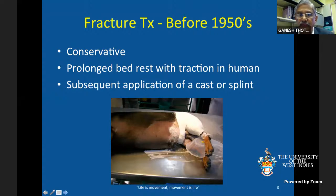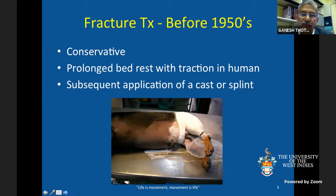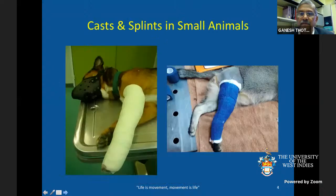Before 1915, fractures in both human and animal patients were treated conservatively. Human patients were confined to bed for weeks or treated with traction followed by a cast or splint. Similarly, animals were treated with cast or splint application, and animals would be free from pain after bandaging.